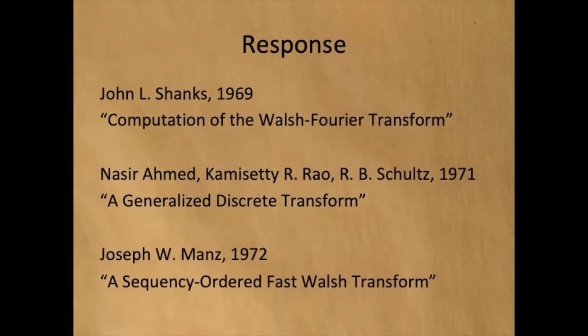Fortunately, in 1969, John Shanks showed how to compute the fast Hadamard transform. He used techniques similar to Cooley and Tukey's fast Fourier transform. Within a few years, Ahmed, Rao, and Schultz, as well as Mance, had generalized his transform and even begun calling it a fast transform.